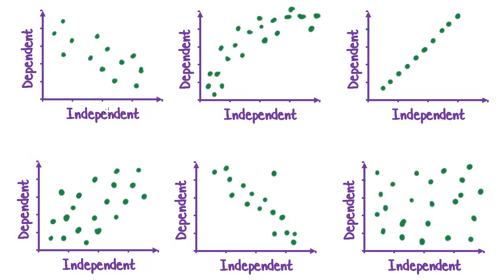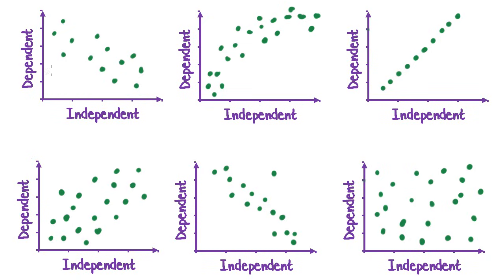For this first one, the direction is negative because it seems to be decreasing down the page — as the independent values increase, the dependent values decrease. That's a negative direction. In terms of form, is it linear or non-linear? I'd say it's generally linear; it seems to follow a straight line. The strength — this is fairly strong; I would probably call it moderate. They're quite close together and follow that line fairly well.